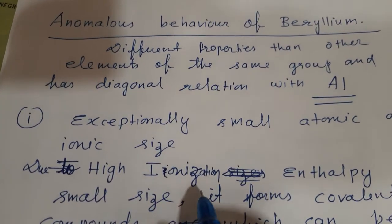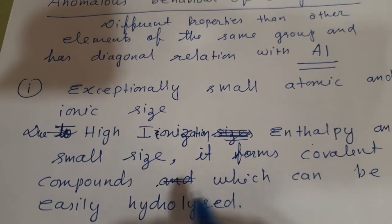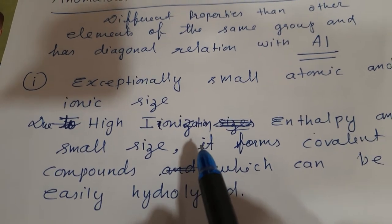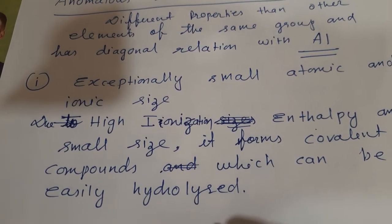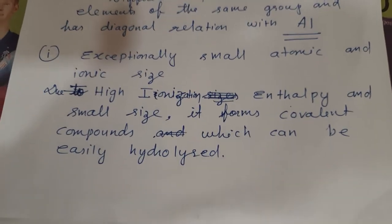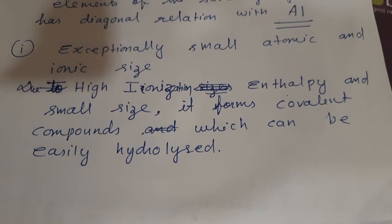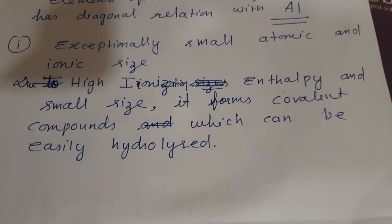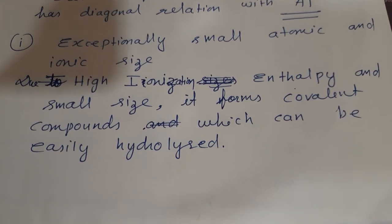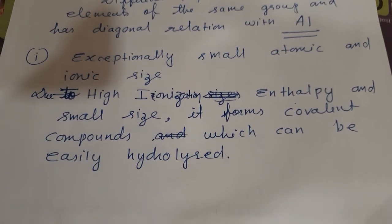Due to high ionization enthalpy and small size, beryllium forms covalent compounds which can be easily hydrolyzed. The configuration is 1s² 2s², so the 2s² is completely filled and very tightly bound to the nucleus, meaning more energy is needed to remove the electron — hence high ionization enthalpy. It forms covalent compounds whereas other elements of the group form ionic compounds.